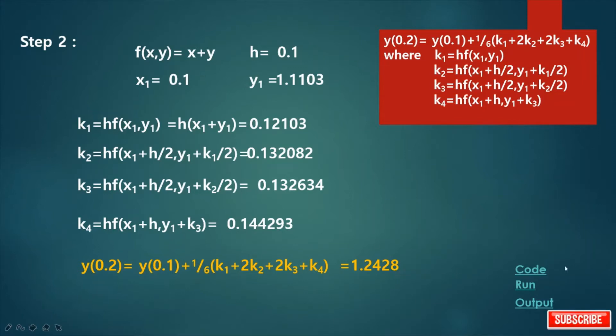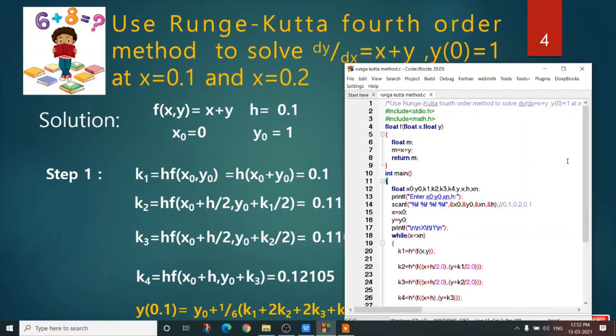It is time to see how we can write the code. This is our coding. Here I declare one function f, return type is float and arguments are also float. Here I declare two float variables x and y. m equals to x plus y where m is a float variable. I am writing m equals to x plus y because our function is dy/dx equals to x plus y.